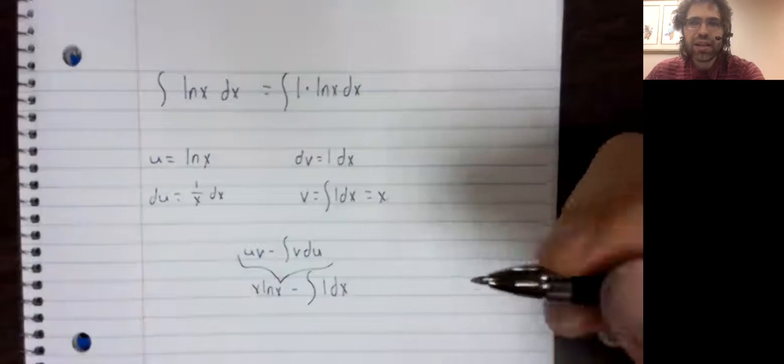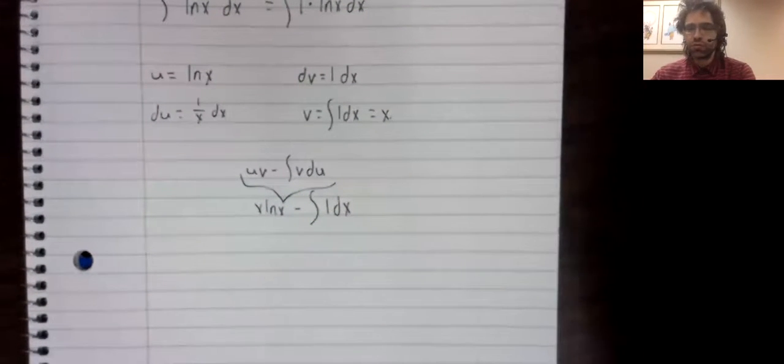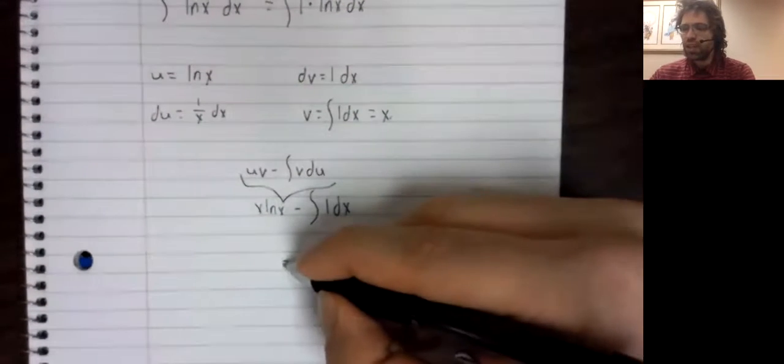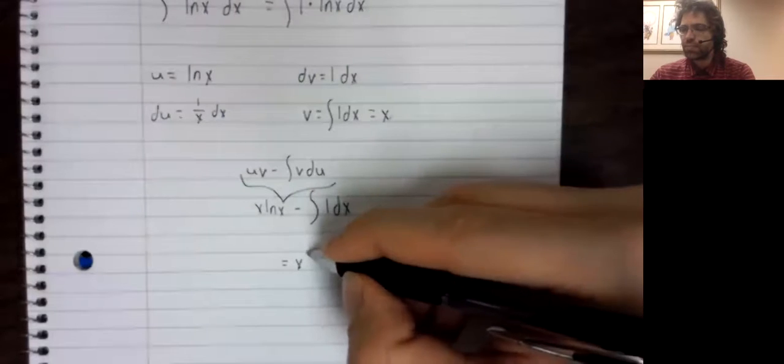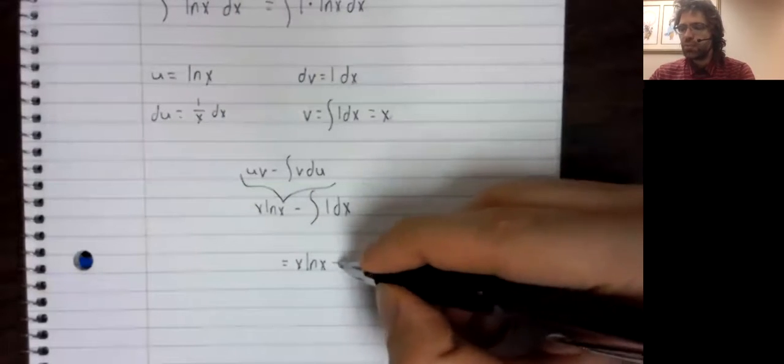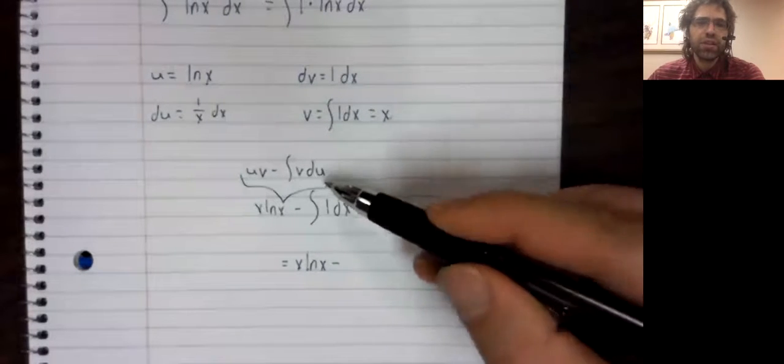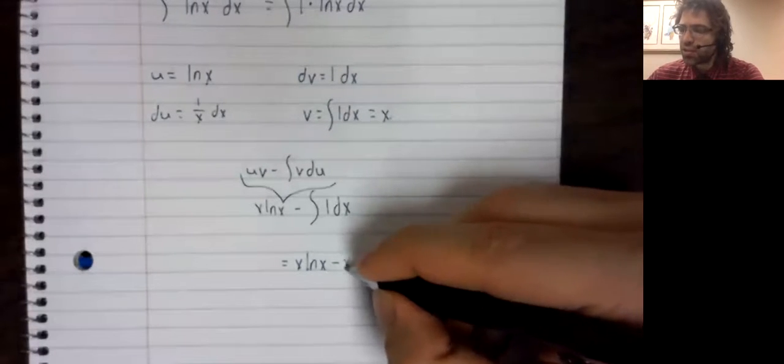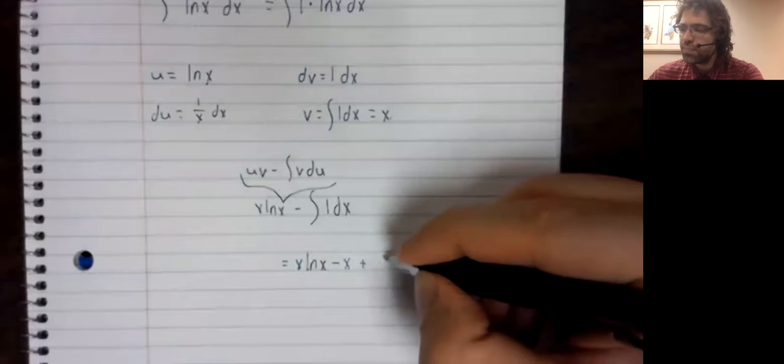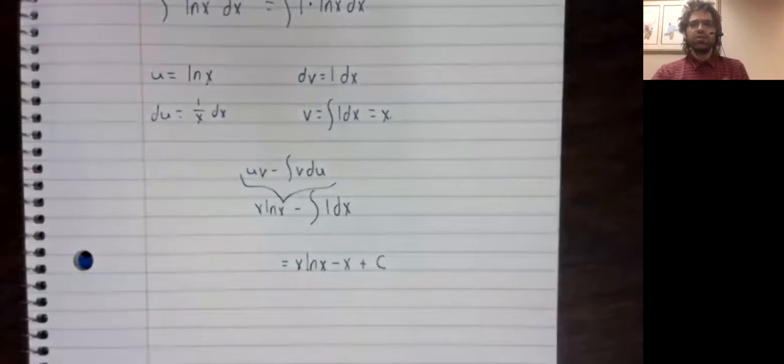x times the natural logarithm of x. This integral is x. And we've got a constant of integration.